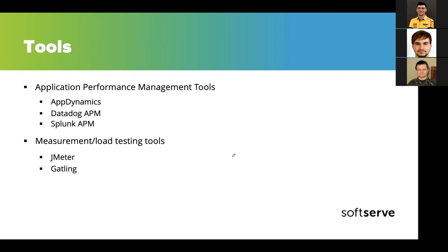The worst thing about APMs is they are very expensive — maybe cheaper to buy a helicopter. For testing tools, worth mentioning are JMeter and Gatling. It's very useful to have them embedded in your CI/CD pipeline so you can track how each change influences performance and catch hotspots early.